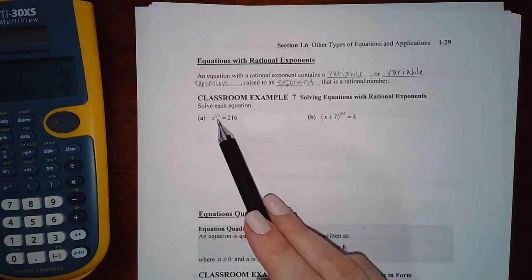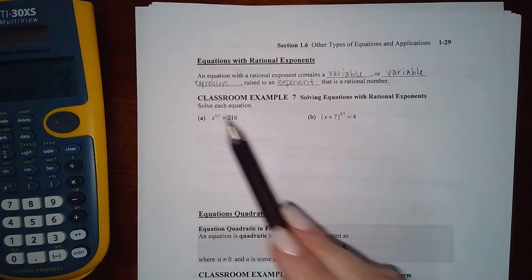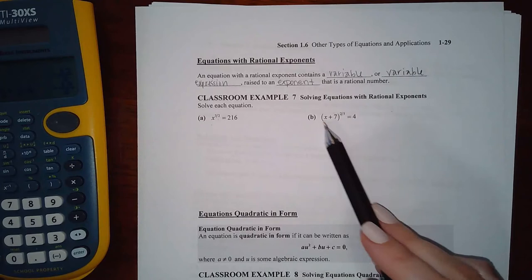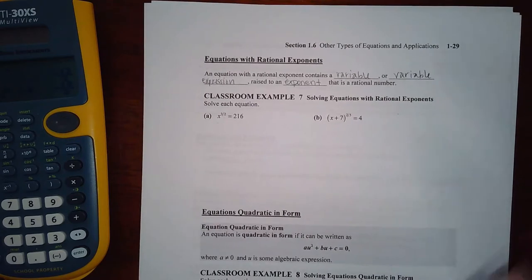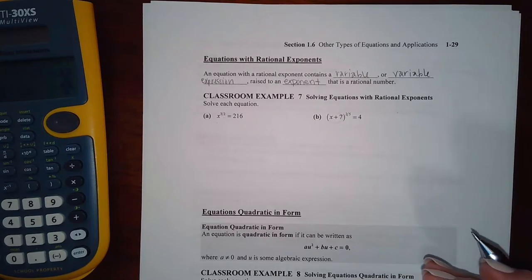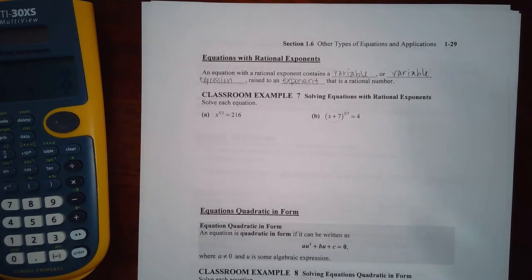So here you have a variable raised to a fraction exponent. Here you have an expression raised to a fraction exponent. And the easiest way to explain how you solve these is you just use the reciprocal of that exponent on both sides. And we're definitely going to be using our calculators to simplify that a little bit.